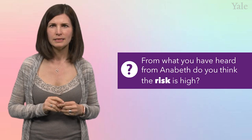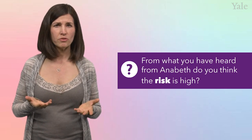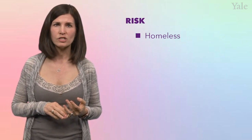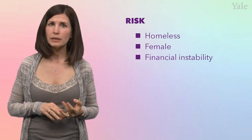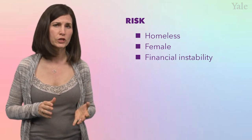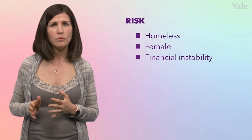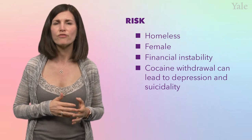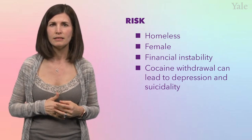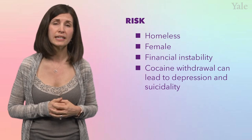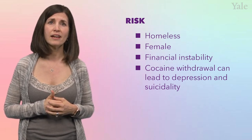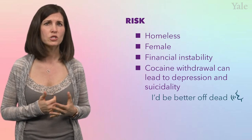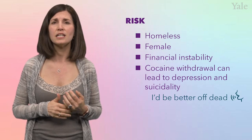Let's start with risk. From what you have heard from Annabeth, do you think the risk is high? We can deduce that Annabeth is at risk for trauma given that she's homeless, she's a female, and she has no money. She will likely put herself in harm's way to obtain more cocaine if she doesn't enter treatment. Cocaine withdrawal can lead to profound depression and suicidality. So you ask a follow-up question about suicidality, and she tells you that yes, lately she's been having more thoughts that maybe she'd be better off dead than to continue living this way.